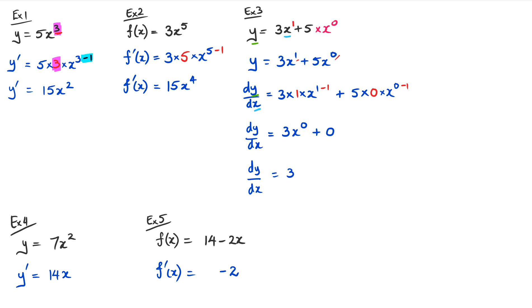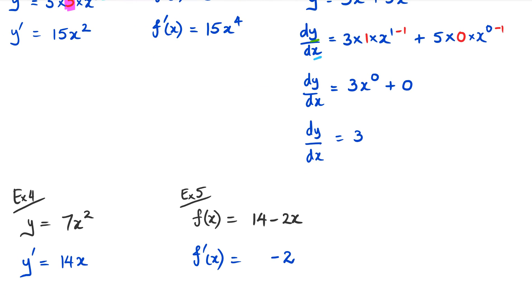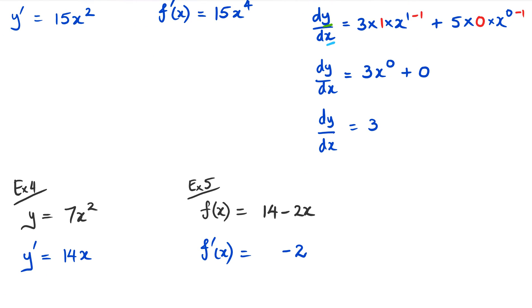And when it was 5, the number 5 actually disappears. So when we have in example 5 here, when I see 14 minus 2x and I differentiate it, the 14 will become 0, and the negative 2x will become negative 2.